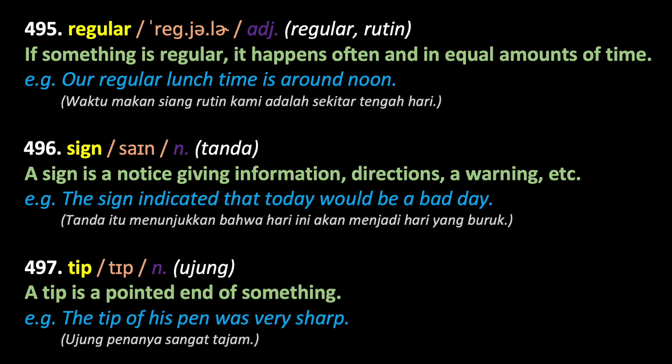Sign — a sign is a notice giving information, directions, a warning, etc. The sign indicated that today would be a bad day. Tip — a tip is a pointed end of something. The tip of his pen was very sharp.